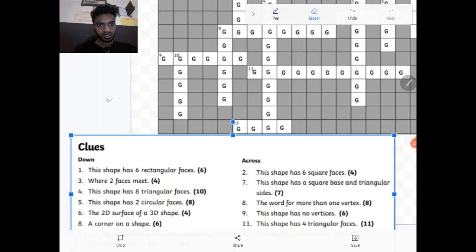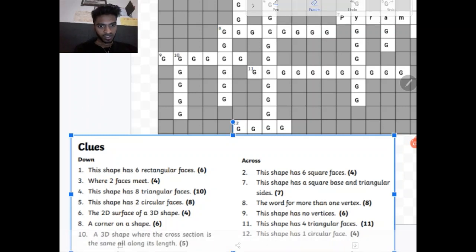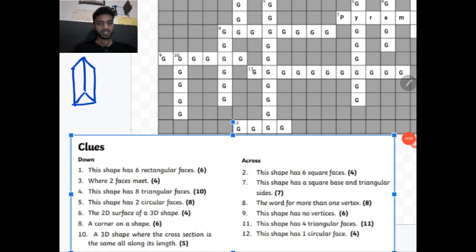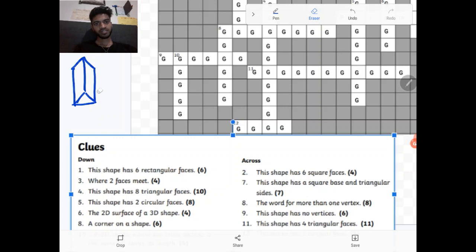Number 10 down. A 3D shape where the cross section is the same all along its length. So the answer to number 10 is prism. A prism is often a shape where two faces are the same. So the top and the bottom face are the same. And it has this elongated bit. So it's called a triangular prism. Other ones include hexagonal prism.